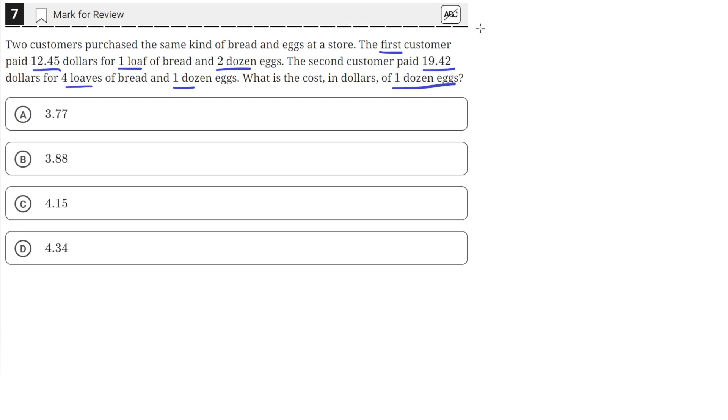We can model this with a system of equations. The first customer paid $12.45 total for one loaf of bread. We'll say that's L. And for two dozen eggs, we'll just say that's E. So he bought one loaf of bread and two dozen eggs.